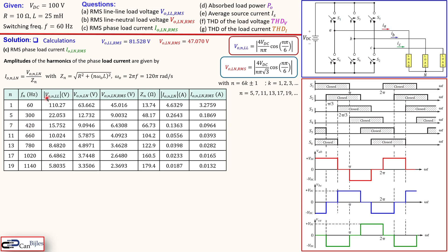The table includes the line-to-line harmonic voltage components and the line-to-neutral harmonic amplitudes, with their RMS values obtained by dividing by √3 then by √2. The impedance is calculated as Z = √(R² + (n·ω·L)²) with R=10 Ω and L=0.025 H. The current amplitude for each harmonic is the line-to-neutral harmonic voltage divided by the impedance, and dividing each by √2 gives the RMS values.